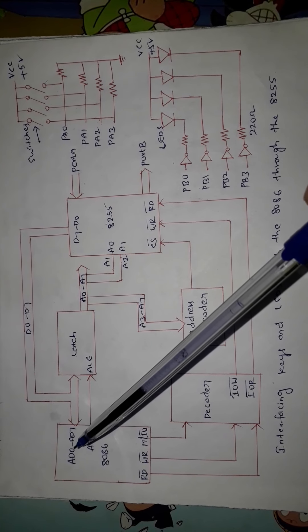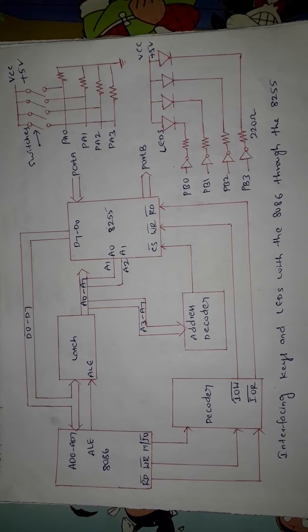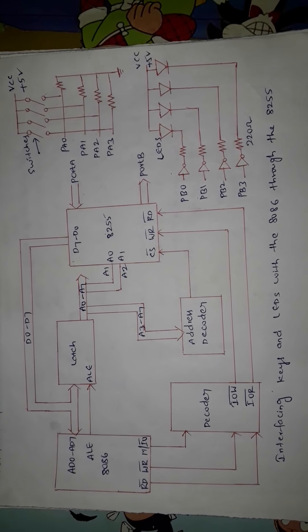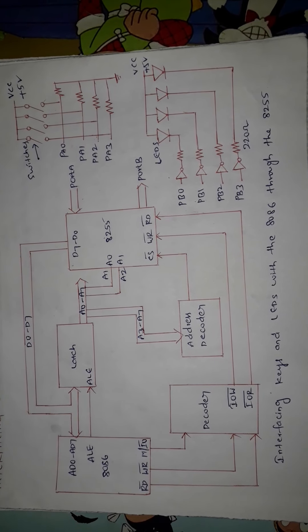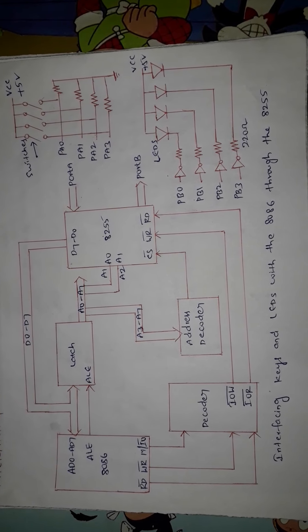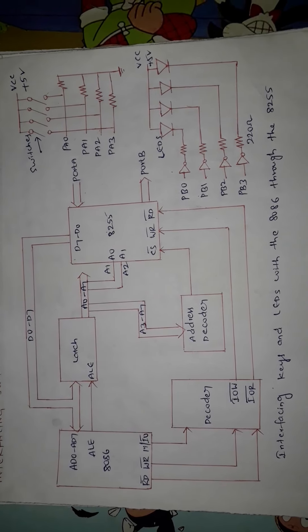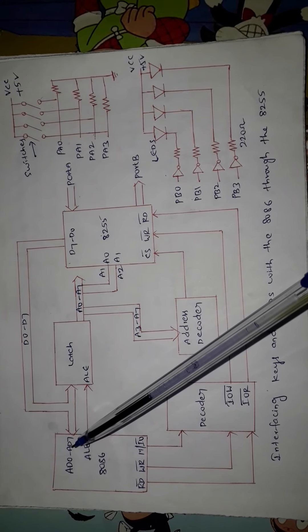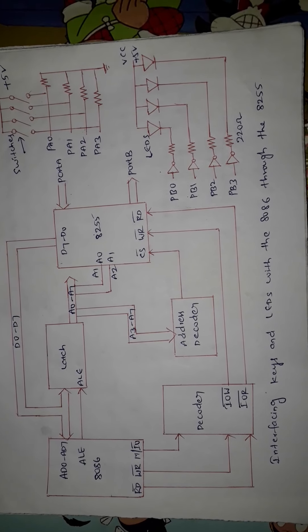We already know that in 8086 the size of the address bus is 20 bits, that is A0 to A19, and that is used to address 1 MB of memory. Whereas if you want to address I/O devices, you can address them by using an 8-bit value or a 16-bit value. In this diagram we are using an 8-bit address, for which we use address lines A0 to A7 to assign 8-bit addresses to the I/O ports available with 8255.